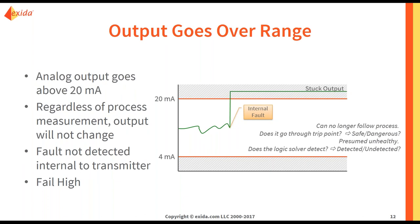Now let's say your output goes over range — your analog output goes above 20 milliamps. Regardless of the process measurement, your output will not change, so it is no longer following your pressure, temperature, flow, etc. The fault is not detected internal to the transmitter. This would be called a fail high. Without knowing your trip point, we don't know if this is a safe or dangerous failure, or if it is detected or undetected, without knowing how your system is configured. We will go into that later.